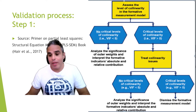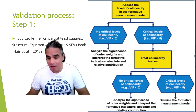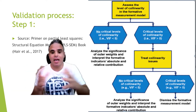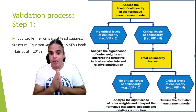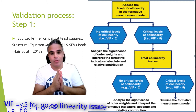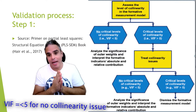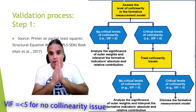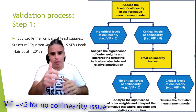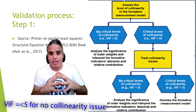In step one, we assess the level of collinearity in the formative measurement model. If VIF is higher than five, we have to treat collinearity problems. After treating them, we check again — if VIF remains higher than five, we dismiss the formative measurement model. If it is lower than five, we analyze the significance of the outer weights and interpret the indicator's absolute and relative contribution.